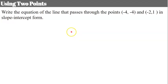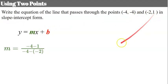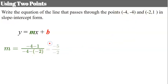Now using two points where neither of the given points is the y-intercept, I'll show you how to find that without graphing. We start with slope-intercept form and find our slope: negative 4 subtract 1, all over negative 4 subtract negative 2. That gives us negative 5 over negative 2 — remember, add the opposite, so negative 4 plus 2 is negative 2 — giving us a positive slope of 5 halves.